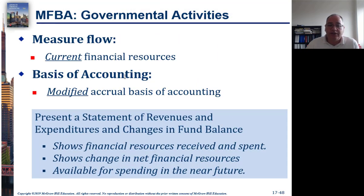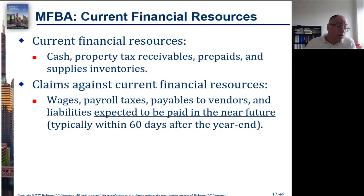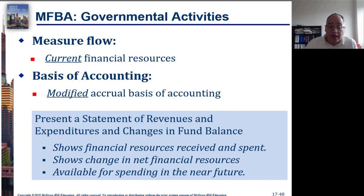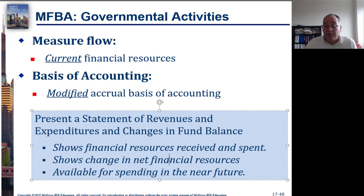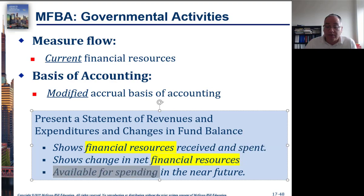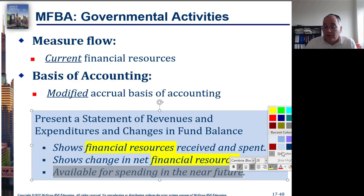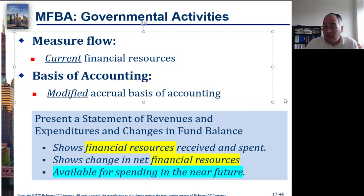For governmental activities, the measurement flow is only going to include current financial resources, and the basis of accounting is going to be the modified accrual basis. The statement of revenues and expenditures and changes in fund balance presents financial resources received and spent, the change in net financial resources, and what's available for spending in the near future. We're focused on financial resources, not all resources — and specifically what's available for spending in the near future. This is quite different from commercial accounting.